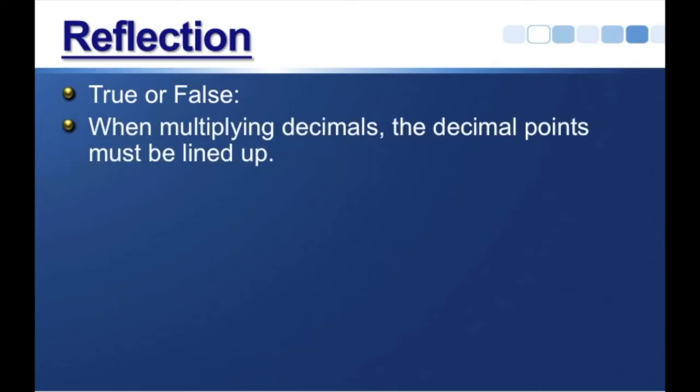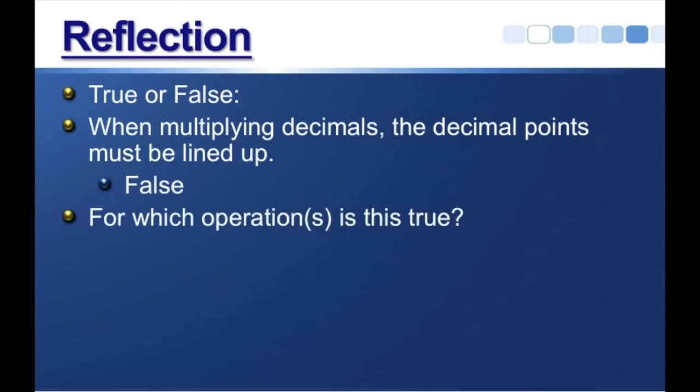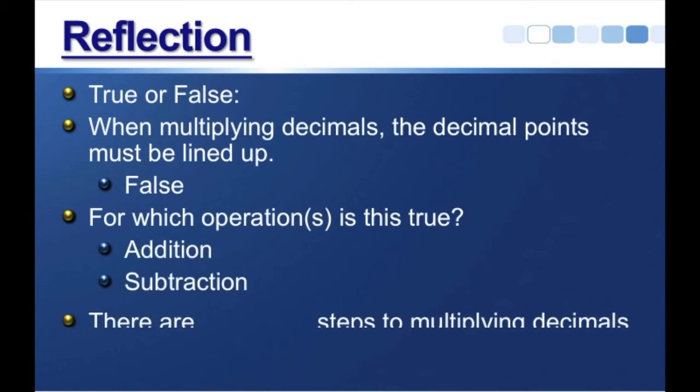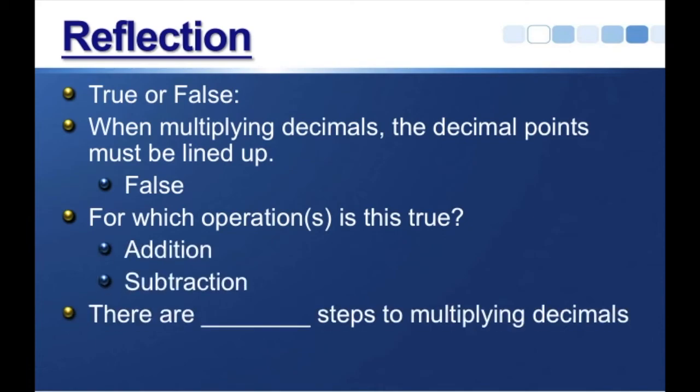So let's review this lesson. True or false? When multiplying decimals, the decimal points must be lined up. That is false. For which operations is this true? Addition and subtraction. There are blank steps to multiplying decimals. Well, there are three steps.